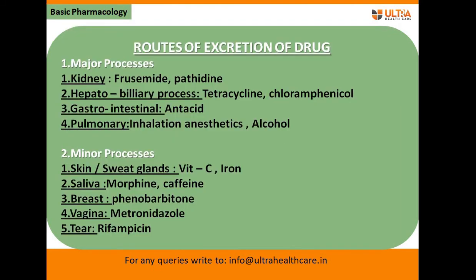Next, we have routes of excretion for drugs. The majority of drugs are eliminated through various pathways involving a major process and a minor process. The major process includes the kidney, hepatobiliary process, gastrointestinal tract, and pulmonary route (through the lungs). These are examples of drugs eliminated through these major routes.